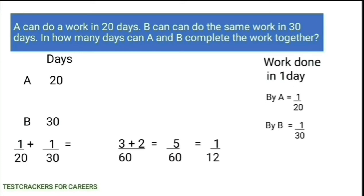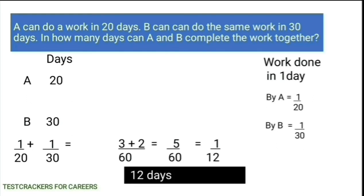We know that the days taken by A and B to complete the work is the inverse of the work done in 1 day by A and B. That is, the inverse of 1 by 12 is 12 days. This is the time taken by A and B to complete the work together.